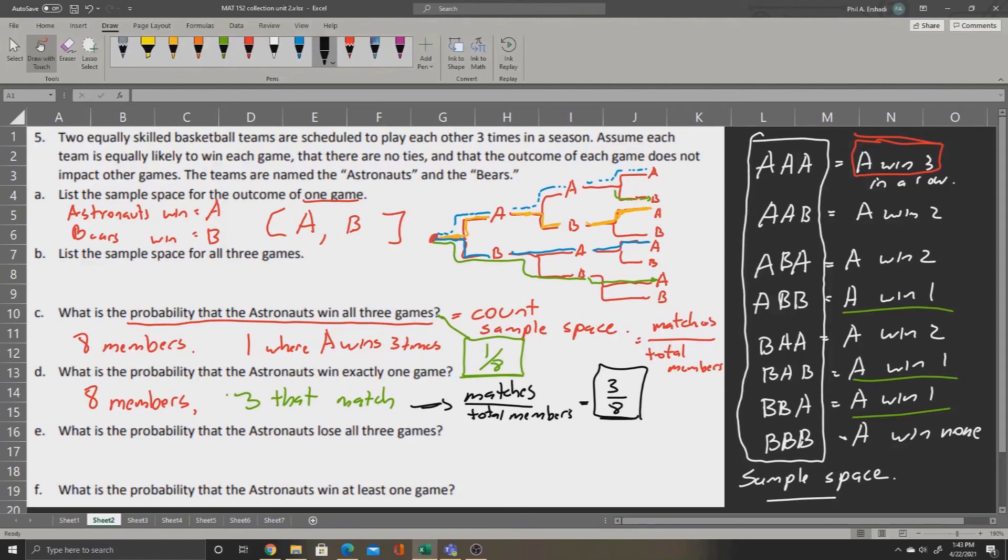Now part E asks, what is the probability that the Astronauts lose all three games? Well, once again, let's write down that we still have eight members. And we only have one place where the Astronauts lose all three games, and that's this one at the bottom, where we have BBB. On all the other ones, the Astronauts haven't lost all three games.